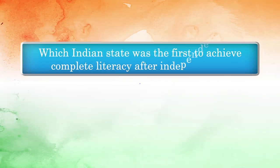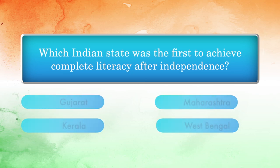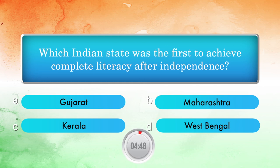Which Indian state was the first to achieve complete literacy after independence? Options: Gujarat, Maharashtra, Kerala, West Bengal.